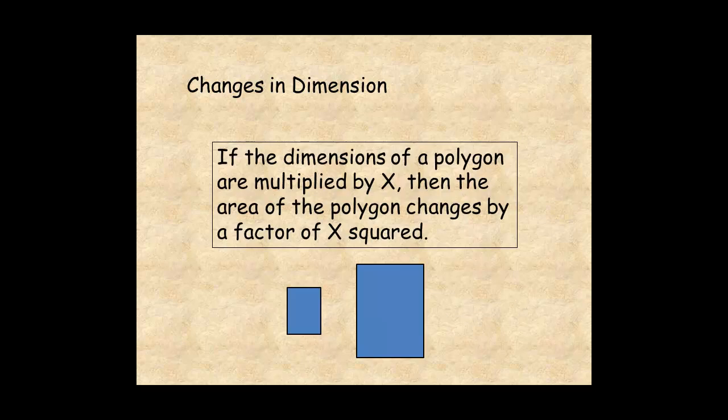In general, if the dimensions of a polygon are multiplied by x, then the area of the polygon changes by a factor of x squared.